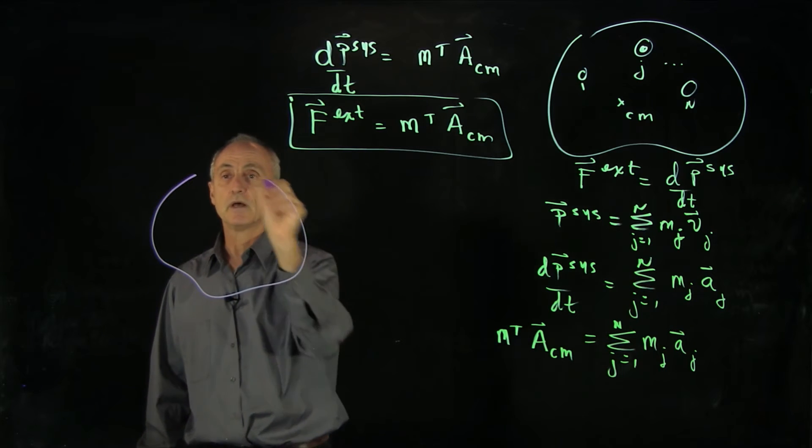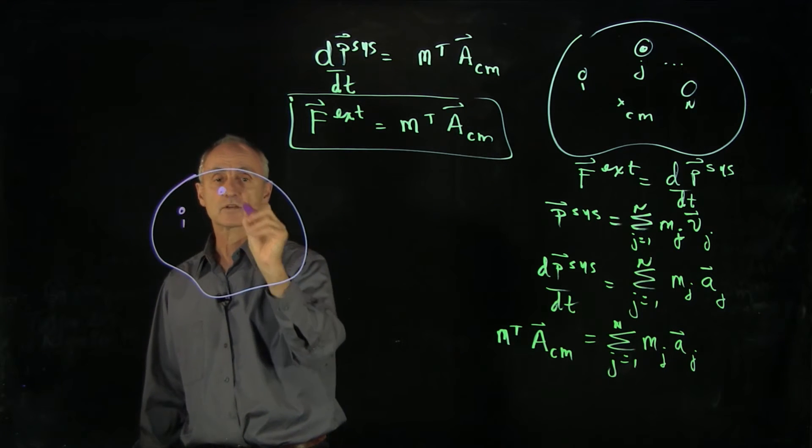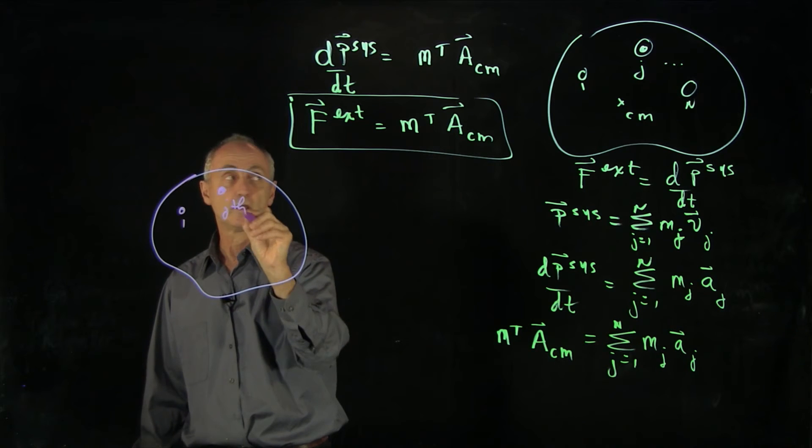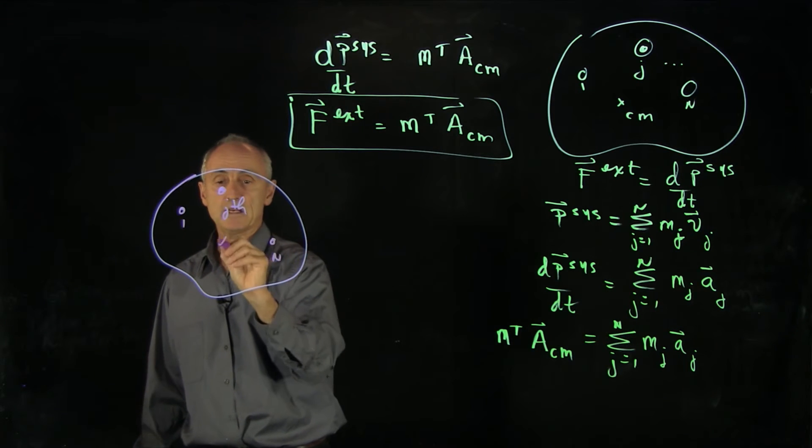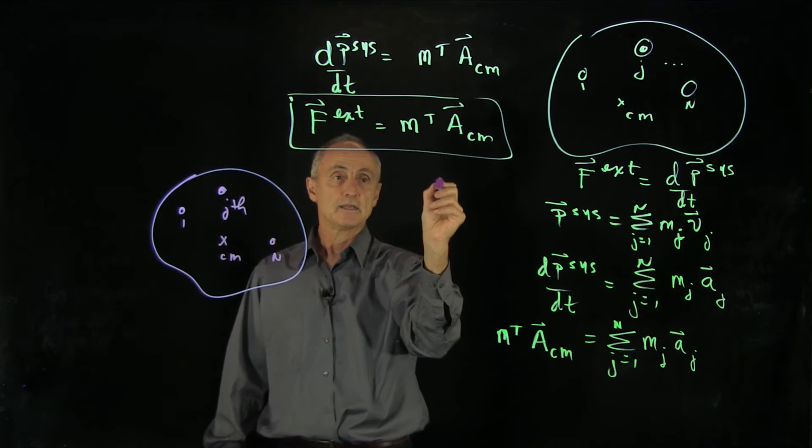Here's our system. We have particles 1, et cetera. That's the j-th particle, n particles. And in here is the center of mass.